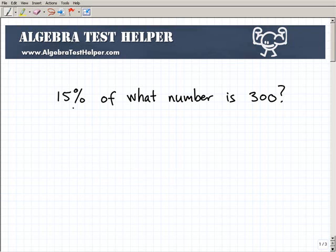But here, we have 15% of what number is 300? So what this question is really saying is, listen, I want to know 15% of a certain number. So remember, I'm going to take that 15%. I want to make it into a decimal, 0.15. Now, I don't know what this number is, 15% of some number. I'm going to give it a variable X.